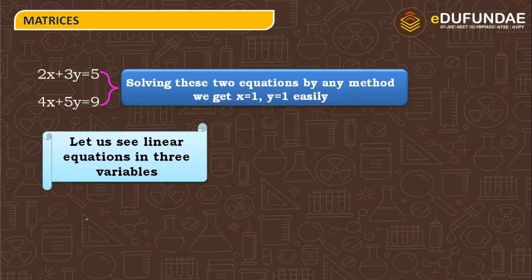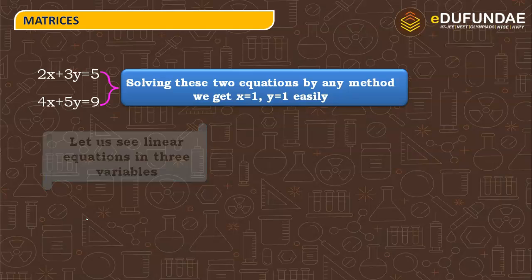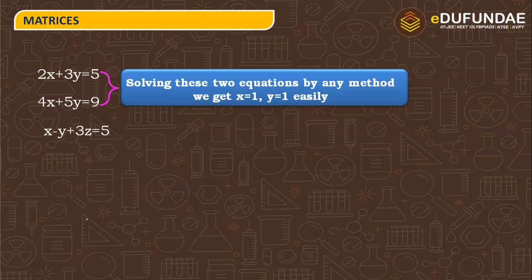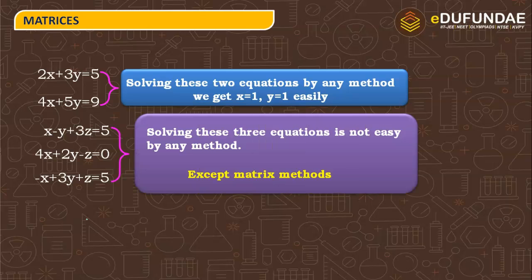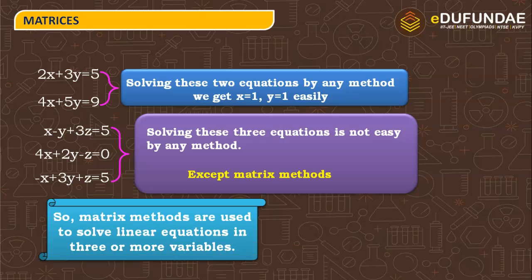Let us see one more linear equation in three variables: x minus y plus 3z equals 5; 4x plus 2y minus z equals 0; minus x plus 3y plus z equals 5. These equations are solved where x, y, and z equal 0. We need to solve these linear equations — the matrix method makes solving them easy. Matrix methods are used to solve linear equations in three or more variables.